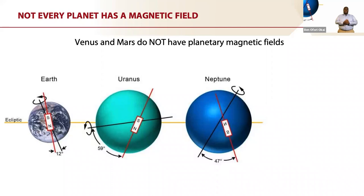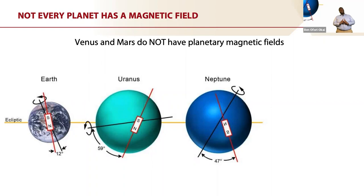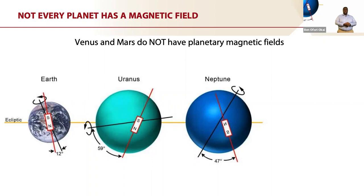Not every planet in our solar system has a magnetic field. Venus and Mars don't have planetary magnetic fields like Earth does. And even other planets that do have magnetic fields can have very different structures from ours. The Earth's magnetic North Pole sits very close to the geographic North Pole, but in the case of Uranus and Neptune there's a much larger separation between the two, and where we think the field is originating is different from the center of the planet compared to Earth. This really makes it an interesting question: what is the cause of the Earth's magnetic field, why does it have the structure it has, and why is it different from these other planets?